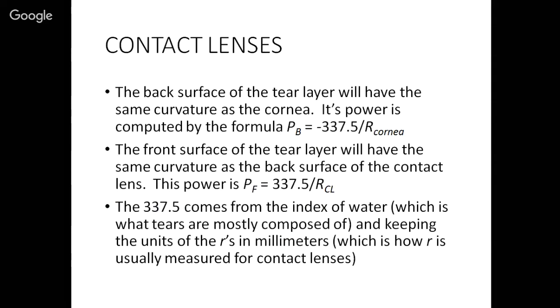So how do you figure out what that tear power is going to be? Well, you treat that tear layer just the way that we treated the lens from earlier in this lecture. So the tear layer's got a back surface, it's got a front surface. The back surface depends on the radius of the cornea because the back of the tear layer is going to be the same as the shape of the cornea. We end up with this fraction with that on the bottom, and then this number minus 337.5 on top. That's the formula for computing the power of the back.